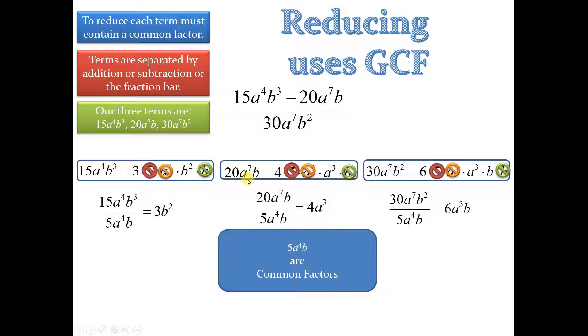And over here, from 20a to the 7th b, I'm left with 4a cubed. Just took those things out and see what's left. And over here, from the 30a to the 7th b squared, divide it out. The greatest common factor, 5a to the 4th b, and you're left with 6a cubed b. So, all you got to do is put those things where they belong, and you're D-O-N-E finished.